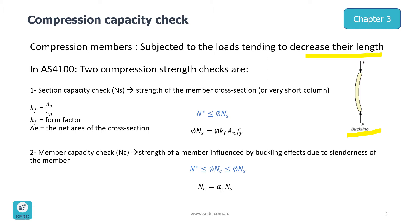In AS4100 there are two compression strength checks required. The first one is section capacity check and the second one is member capacity check.